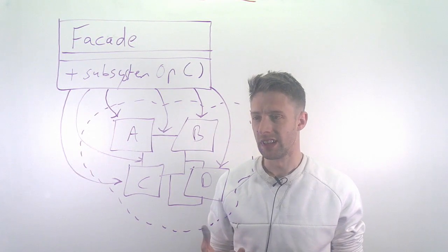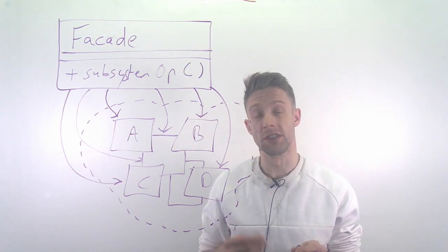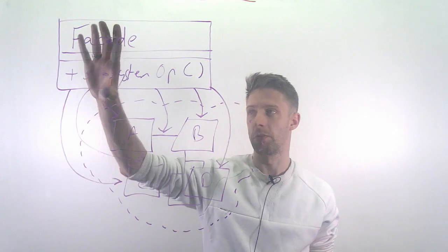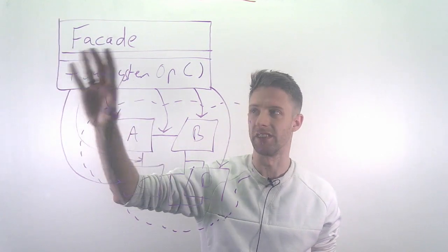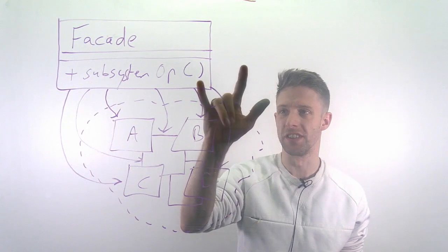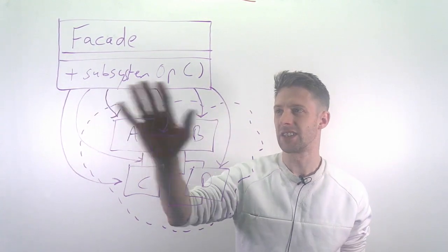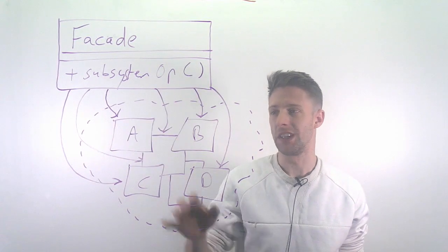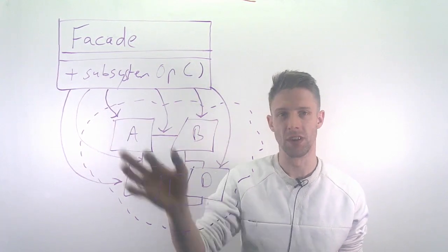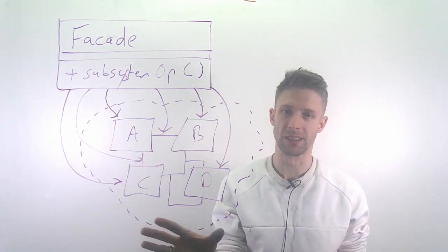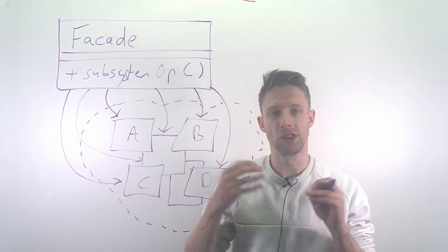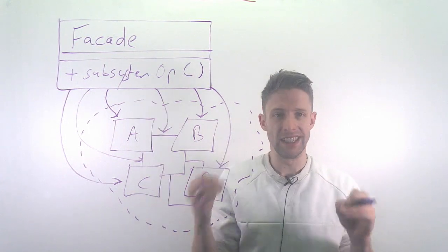So to simplify this, the idea is that you provide a single facade that offers a very specialized operation. Inside this operation is all the complicated workflow of using the subsystem, but it's hidden away. You just see this one easy method that does everything for you.